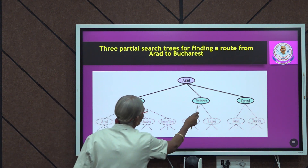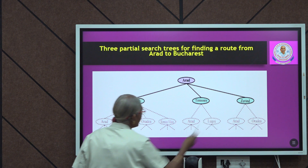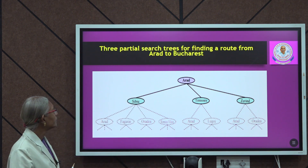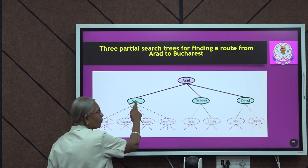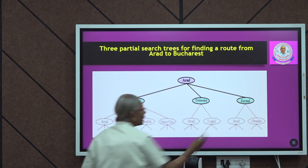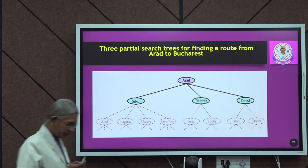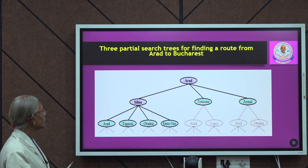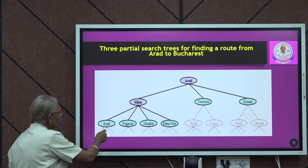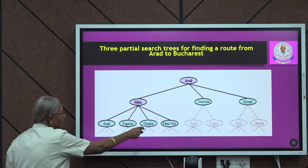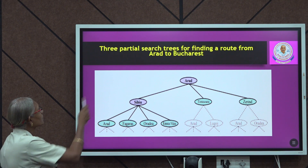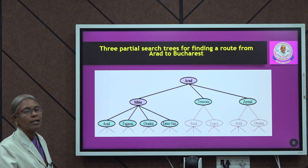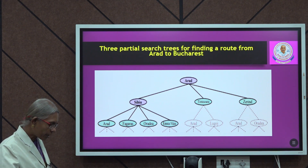We have Sibiu, Timisoara, and Zerind as children of Arad — from Arad I can go to any one of these three. From Sibiu I can then go to any one of its cities. This is the partial search tree.